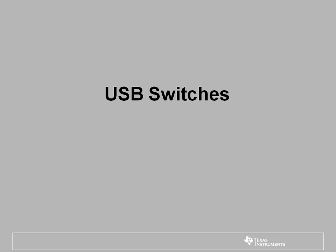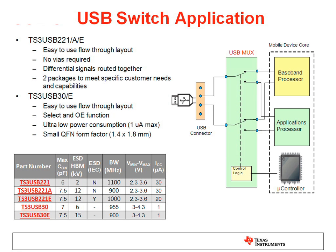Now we will discuss USB switches. In cell phones, a baseband processor and an apps processor need to transmit data via the same USB port. A USB switch is required to route this data properly. For example, as shown, the baseband processor and the apps processor talk on the same line. Based on the control logic, the USB switch will connect to the baseband processor or the apps processor.